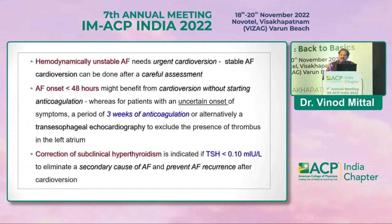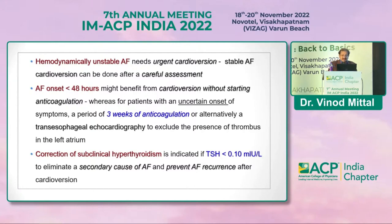If the patient is hemodynamically unstable, immediate cardioversion is required — either pharmacological or electrical. If AF onset is within 48 hours, cardioversion can be performed without starting anticoagulation first.